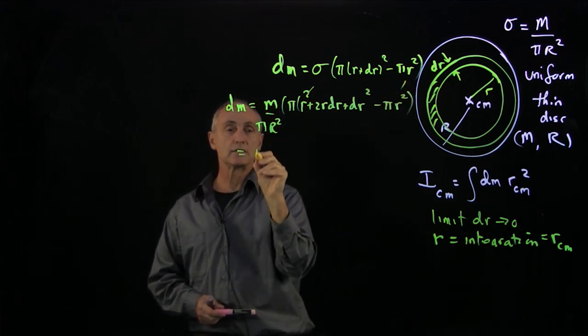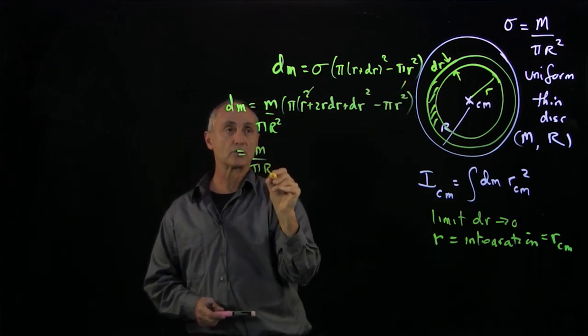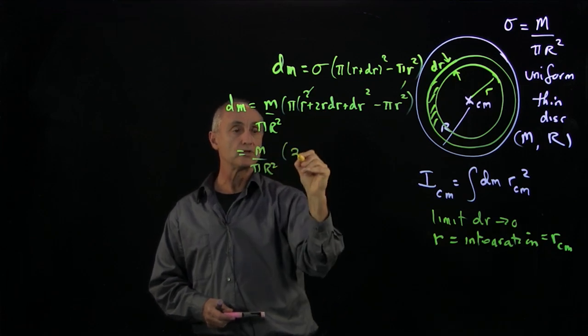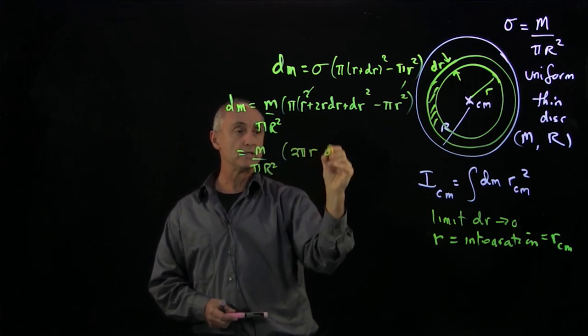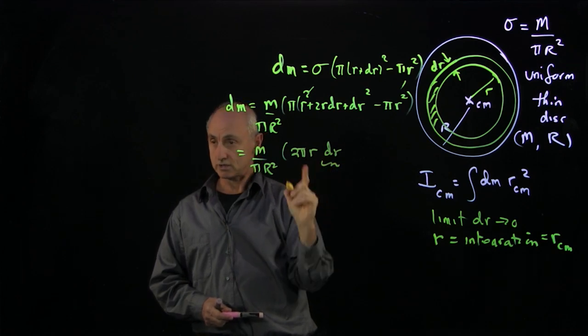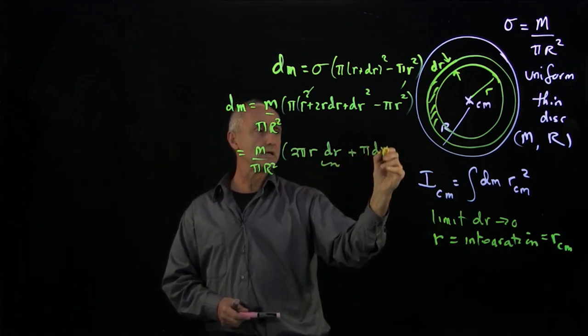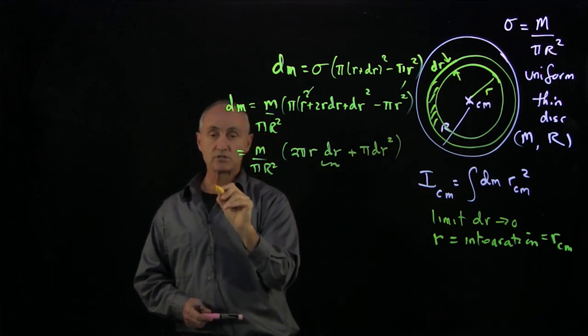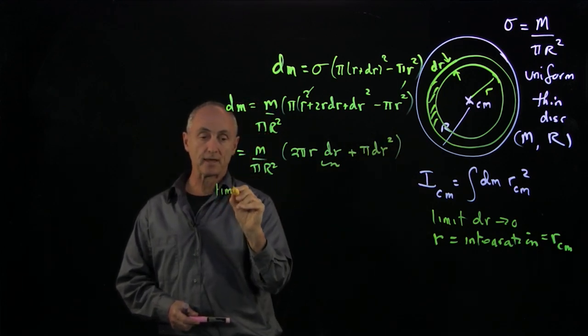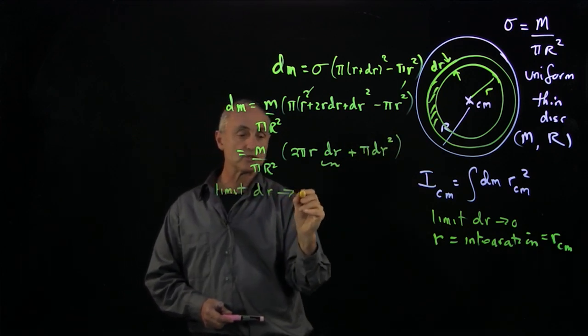And so what I get is m over πr². And in here, I have 2πr dr. Now this is only order dr plus a second term that goes like π dr².